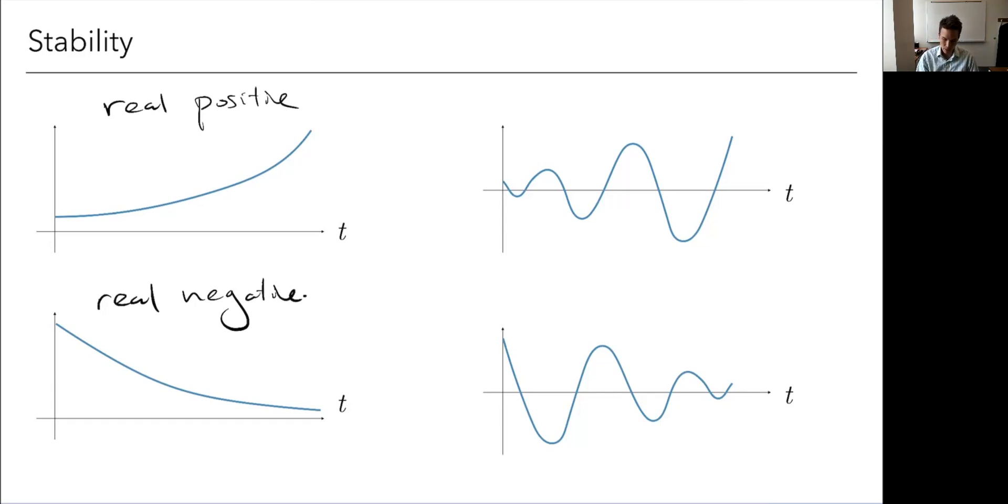So then these ones on the right, since they have an oscillatory component, we know these are complex, meaning they have a real and an imaginary part. The other thing that we know is because this one is decaying, that the real part is negative. Okay, whereas on the top one, because it's increasing, it's blowing up, then we could say the real part is positive. Okay, so these figures directly correspond to our eigenvalues.